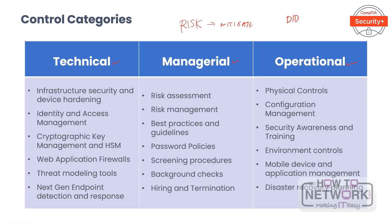Let's dig deep on the three types of controls. The first one is technical. Technical controls are security mechanisms that specific systems run, either manually or more often automated and orchestrated. These controls deliver confidentiality, integrity, authenticity, and availability protections.